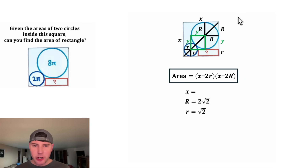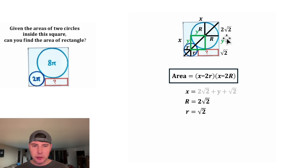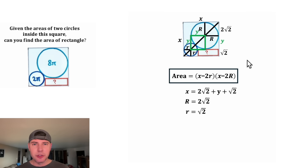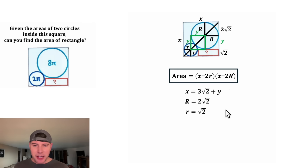We know big R is equal to 2√2, and we know little r is equal to √2. So we can express X in terms of Y: X, the height of this large square, is equal to 2√2 plus Y plus √2. We can swap these two terms — 2√2 plus 1√2 is 3√2. So we have X is equal to 3√2 plus Y.